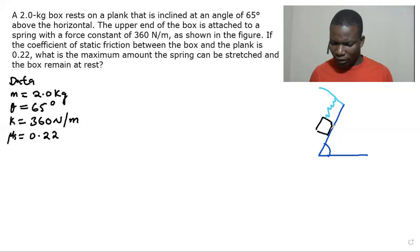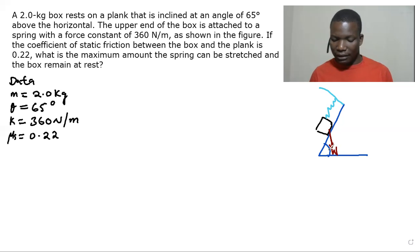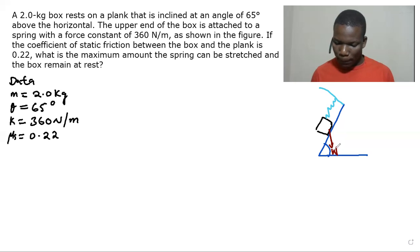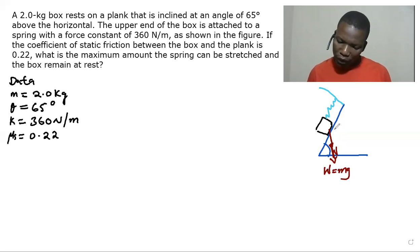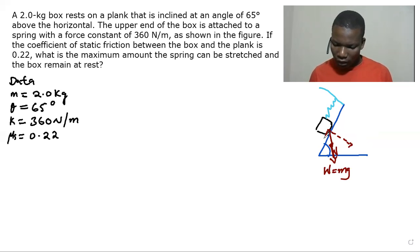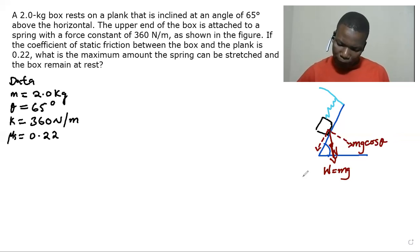We have the weight of the box acting downward. Since the box is on an inclined plane, the weight has to be resolved. The weight mg has a vertical component of mg cos theta and a horizontal component of mg sine theta. We know theta is 65 degrees.